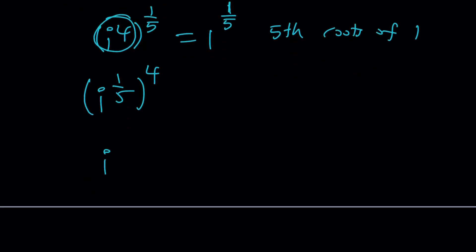If you get something like i to the power 6 over 4, this is problematic. You know why? Because if you think about it as i to the 6th to the 1/4th,